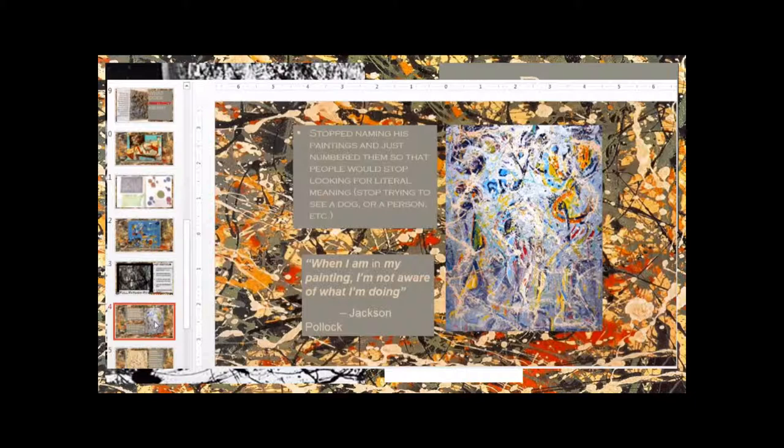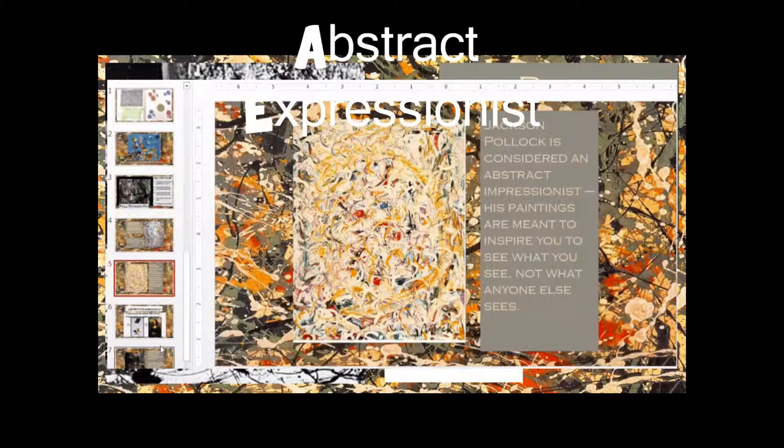He stopped naming his paintings after a while and he just started giving them numbers, so people would stop looking for meanings in his paintings. Like, stop trying to see a dog or a person. He said, when I'm in my painting, I'm not aware of what I'm doing. He would just feel the paint. Jackson Pollock is considered an abstract expressionist. His paintings are meant to inspire you to see what you see and not what anyone else sees.